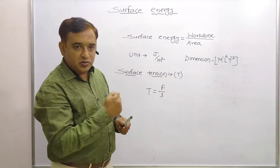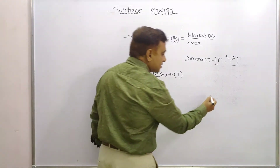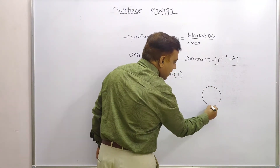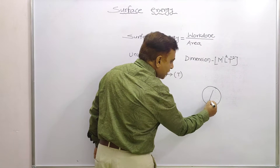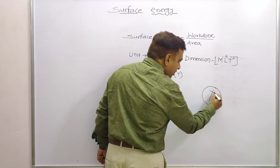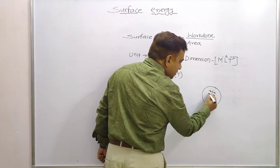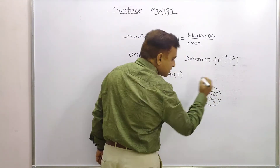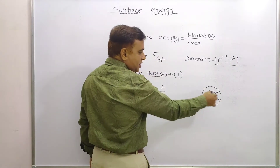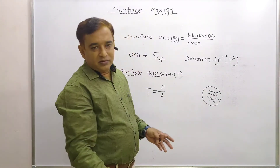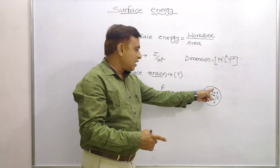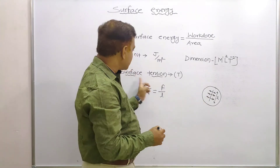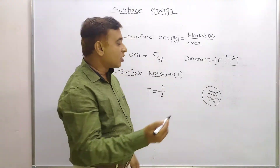Let us draw this concept. Consider this is the surface, and this is the line drawn on it. The perpendicular force per unit length — taking unit length into consideration — the force acting per unit length on an imaginary line drawn on the surface, perpendicular to that line, is called surface tension.